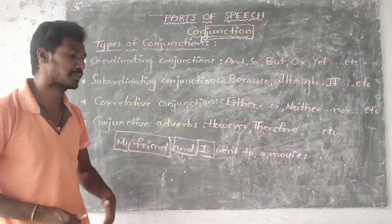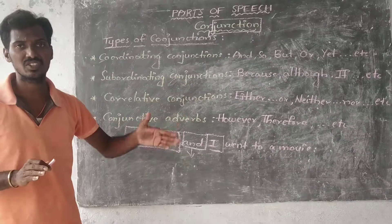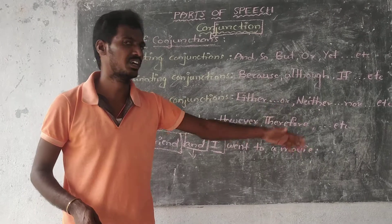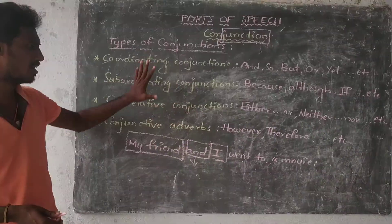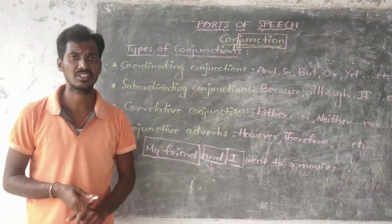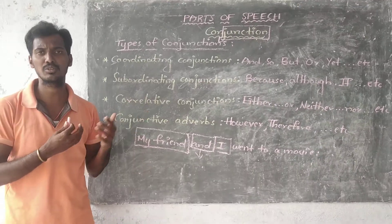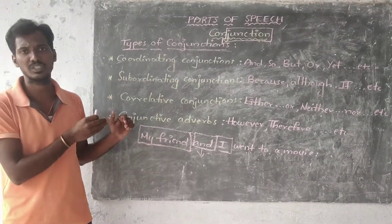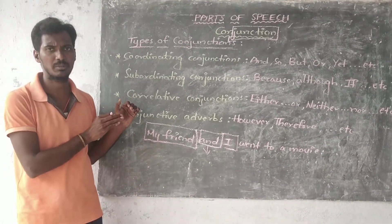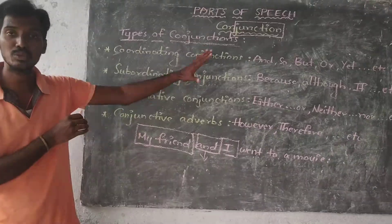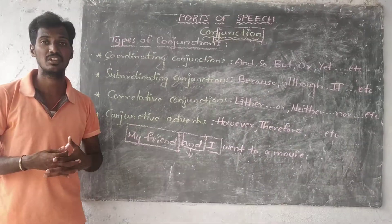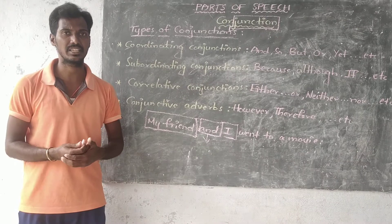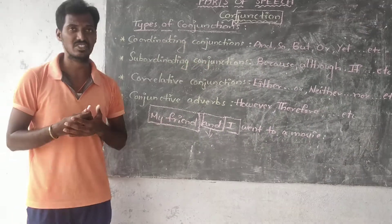The last type is conjunctive adverbs. Conjunctive adverbs are conjunctions, not adverbs. Examples include: however, therefore, etc. These are all related to conjunctions. There are a few more conjunctions to discuss, but these are the most important ones, because in so many cases we use all these conjunctions to combine words, phrases, clauses, and sentences. So this is about conjunctions.